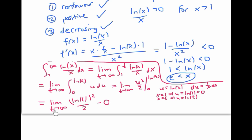Now as t goes to infinity, ln of t also goes to infinity. So ln t squared over two goes to infinity. Therefore, the integral diverges, and so by the integral test, the series also diverges.